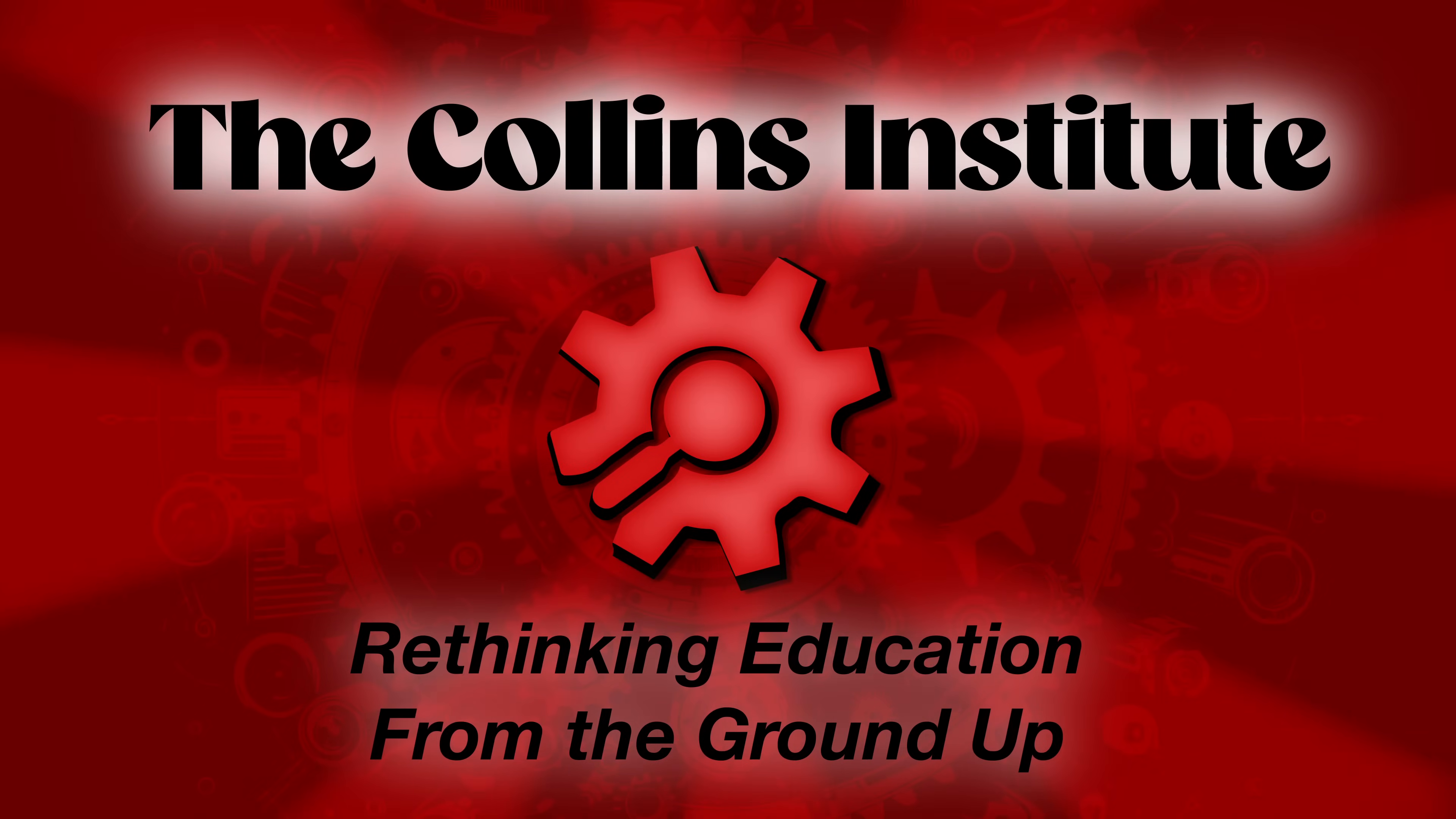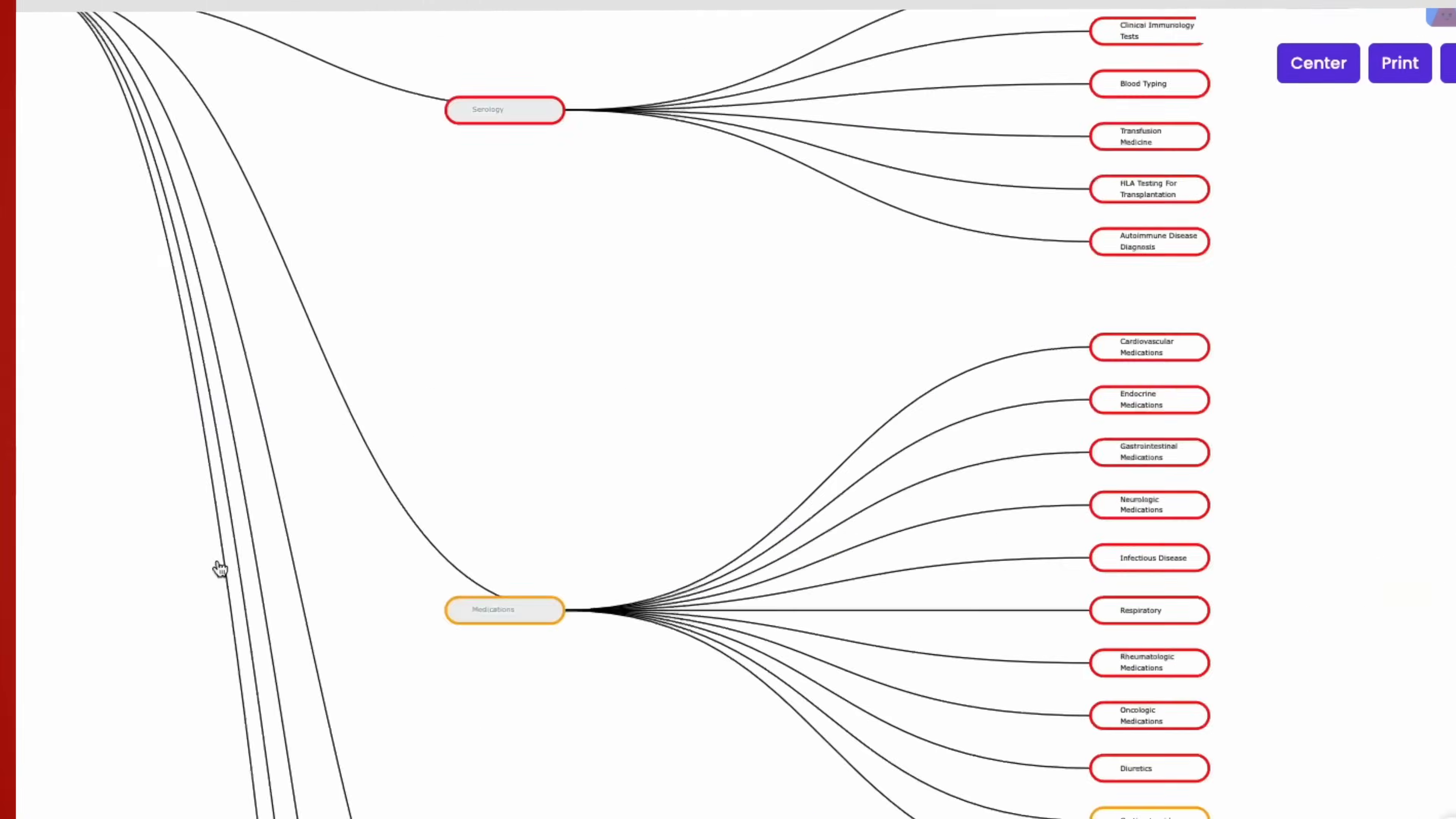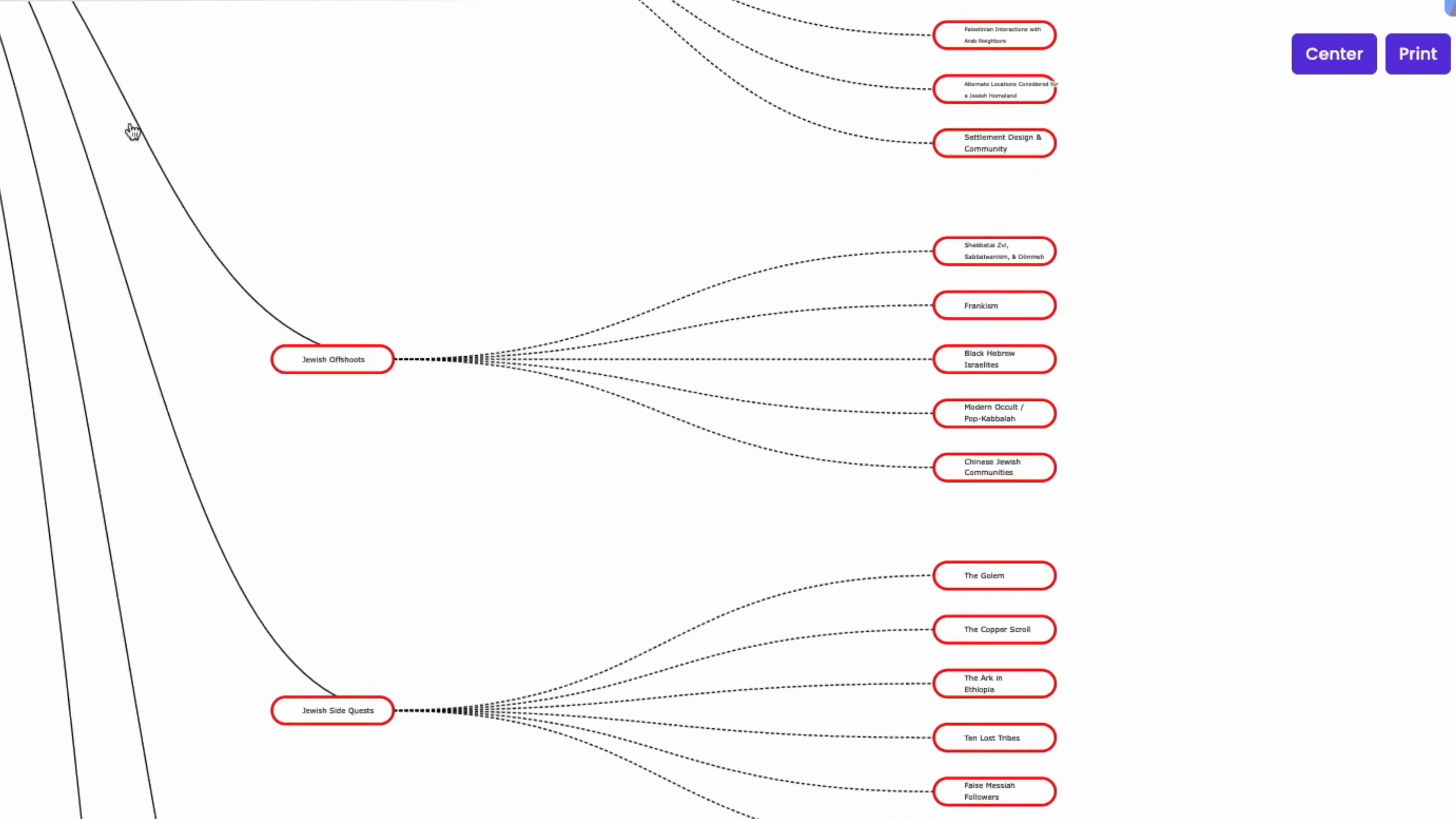To that end, I built the Collins Institute, a comprehensive interactive map or skill tree comprising all of human knowledge combined with a Socratic AI tutor.